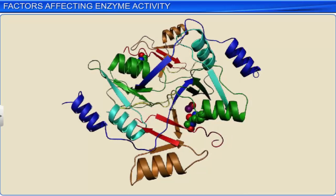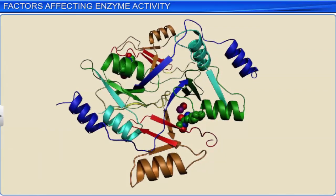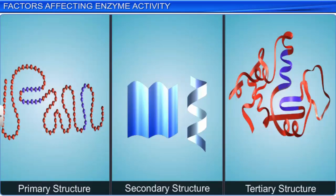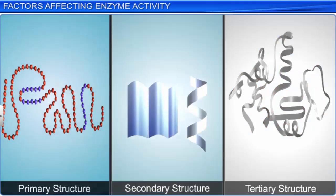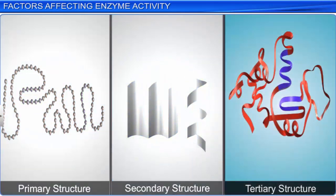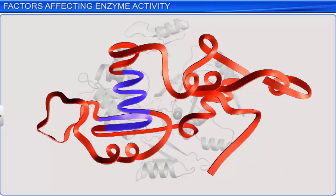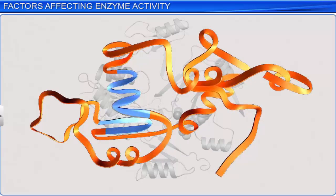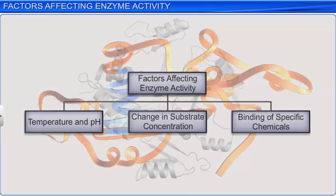Enzymes are mostly proteins and they increase the rate of chemical reactions. Just like proteins, enzymes also have a primary, secondary, and tertiary structure. A change in a few factors can affect the activity of enzymes and can alter the tertiary structure of the protein. These factors include pH, change in substrate concentration, or the binding of specific chemicals that regulate the activity of enzymes.